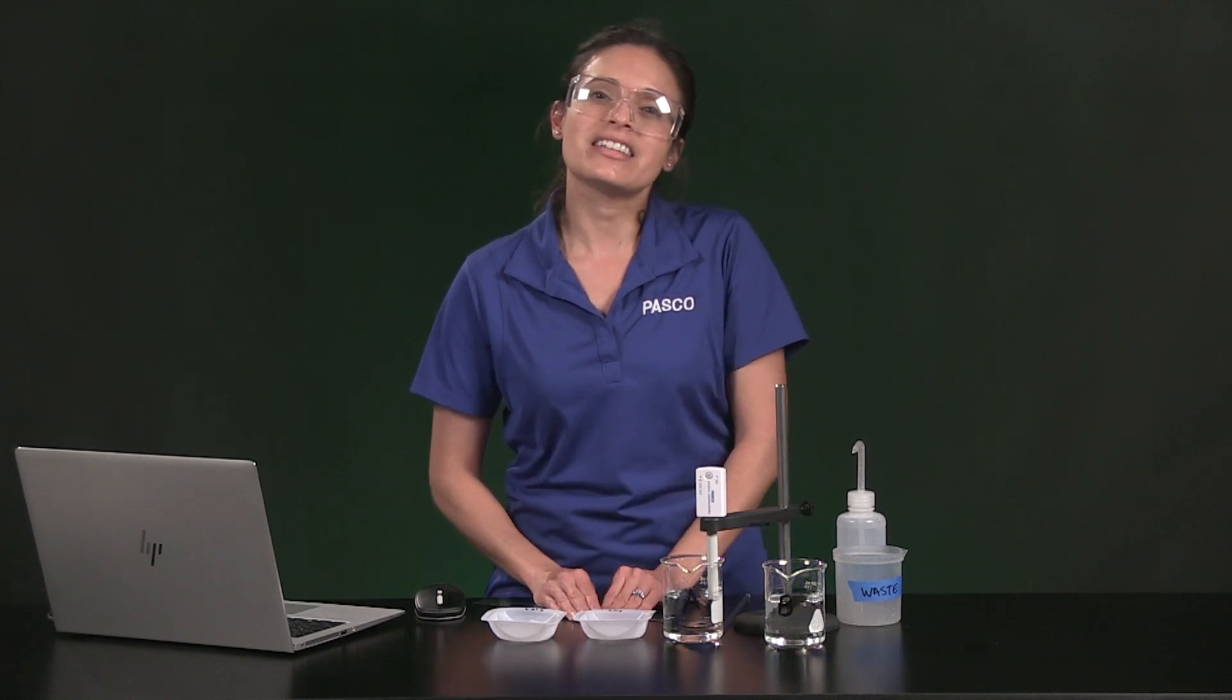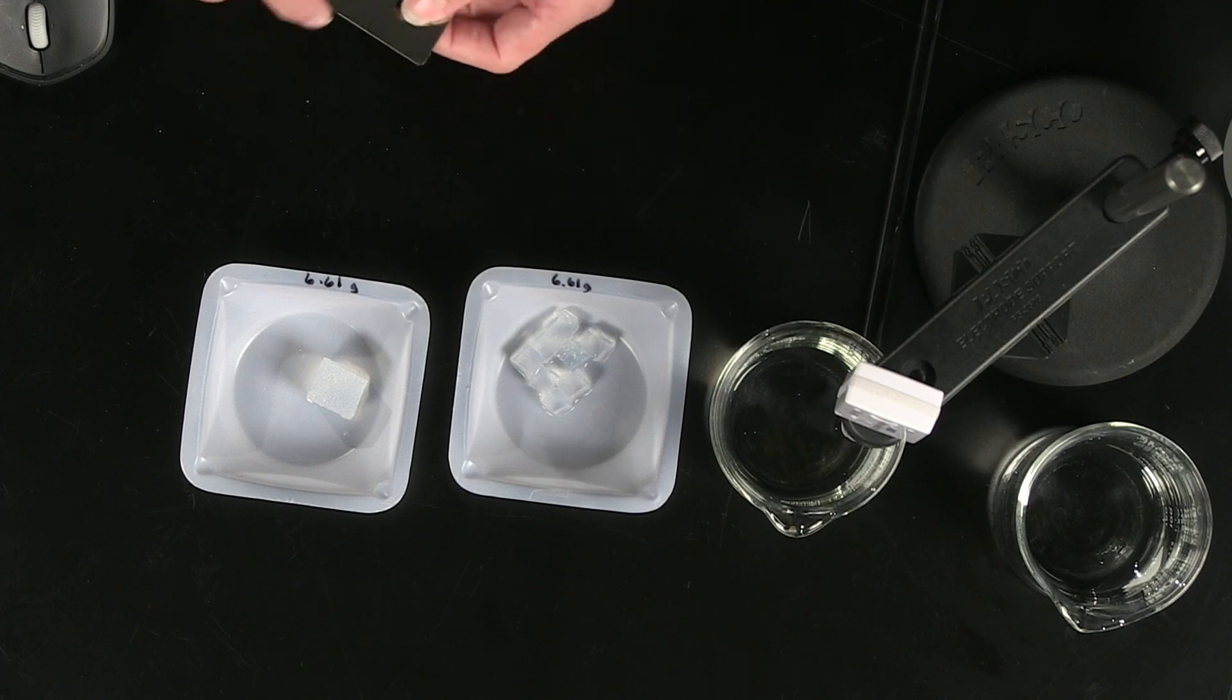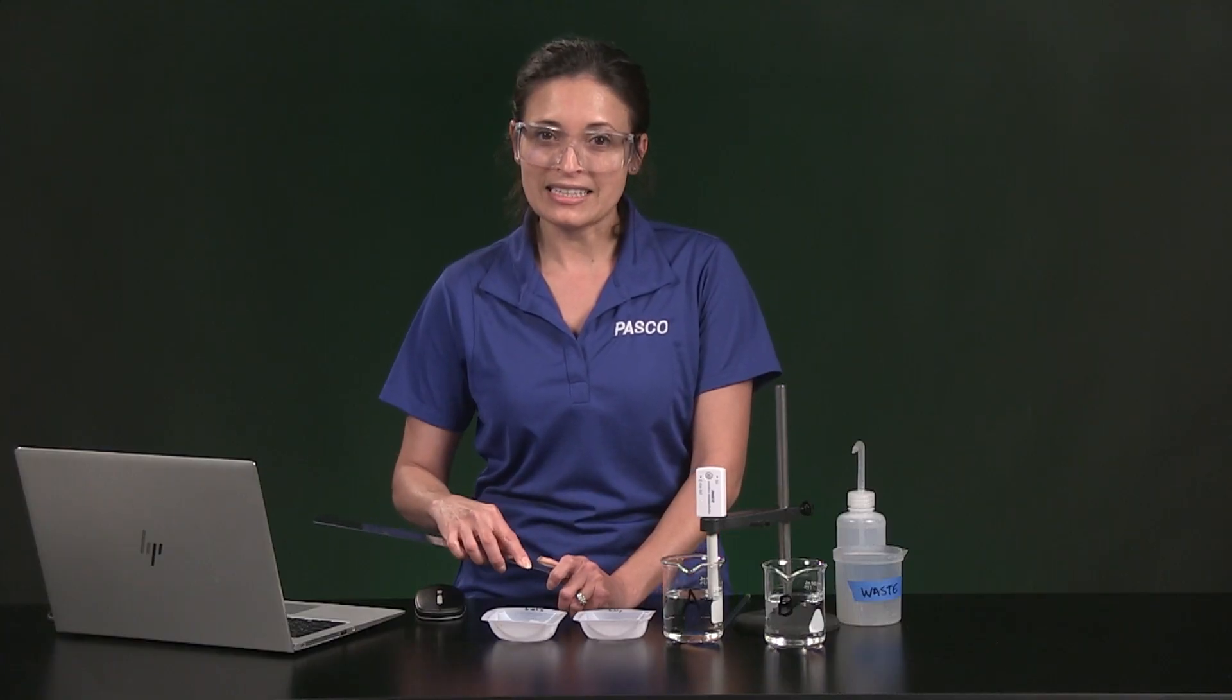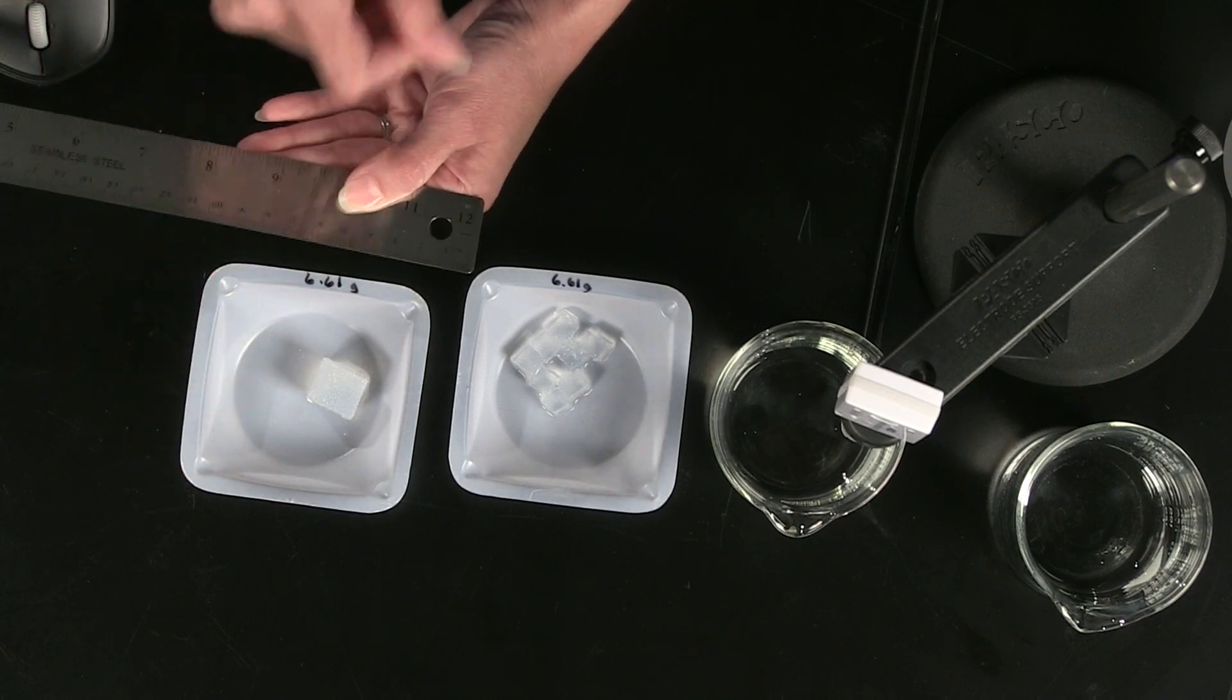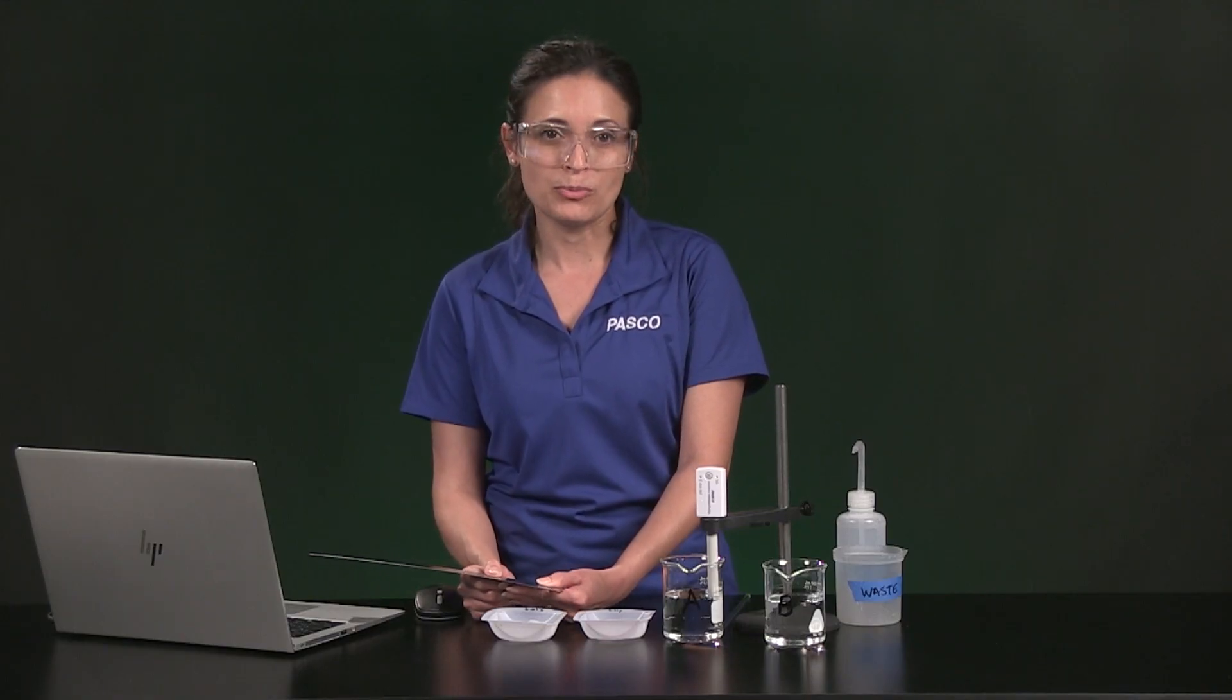Next, you will need to calculate the surface area and volume of each cube sample and enter the information in Table 1. You probably remember that to get surface area, you have to multiply length times width. But remember, each cube has 1, 2, 3, 4, 5, 6 surfaces, so be sure to multiply by 6 to get the total cube surface area.